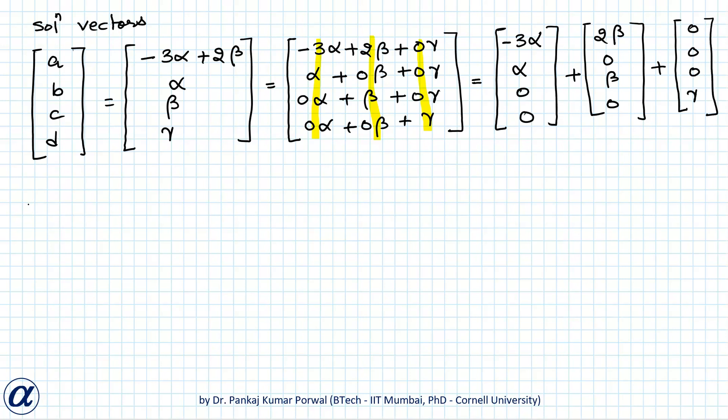So my solution vectors a, b, c, d - I can take alpha common from this so that will be alpha times (−3, 1, 0, 0) plus I can take beta common so that will be beta times (2, 0, 1, 0) plus I can take gamma common so that will be gamma times (0, 0, 0, 1).